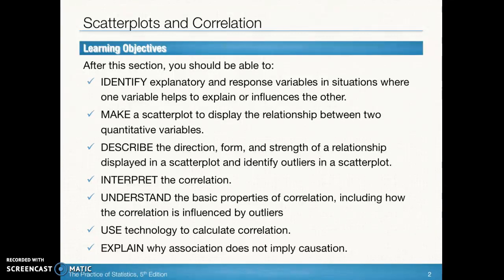We want to be able to interpret the correlation coefficient, which is going to be denoted by the variable R. We want to be able to understand the basic properties of correlation, including what happens to our value of R when we see outliers in the pattern between X and Y. We want to be able to use our graphing calculators to calculate R, and we want to have a very clear understanding of why association between an explanatory and a response variable does not imply that the change in one causes the change in the other.